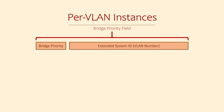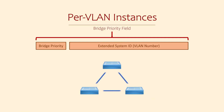Traditionally, the spanning tree topology is the same for the entire switching domain. If a port is the root port, it's the root port for all VLANs. If a port is blocked, it is blocked for all VLANs. In the per-VLAN model, there is a separate spanning tree instance for each VLAN.